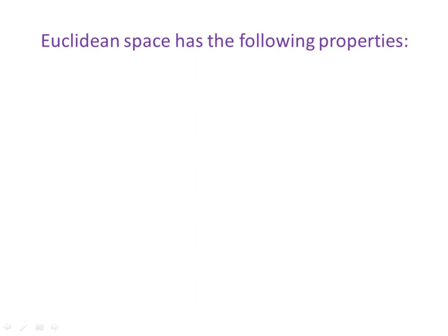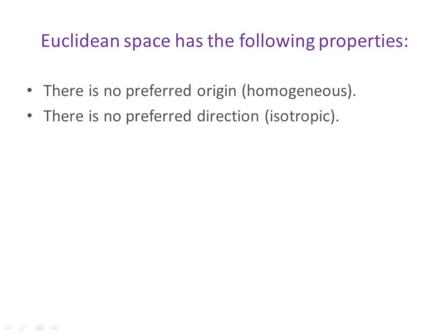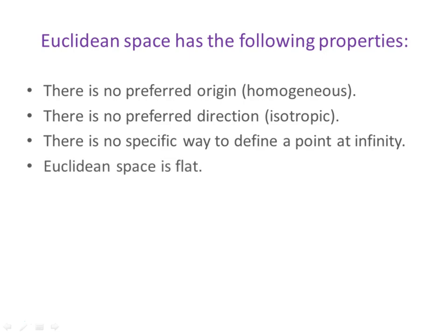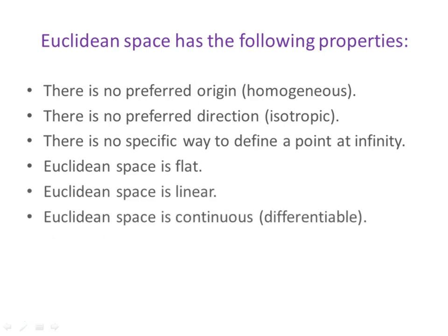Euclidean space has the following properties. There is no preferred origin. We say that the space is homogeneous. That means the same everywhere. There's no preferred direction. We say the space is isotropic. There's no specific way to define a point at infinity. Euclidean space is flat. Euclidean space is linear. Euclidean space is continuous, meaning differentiable.